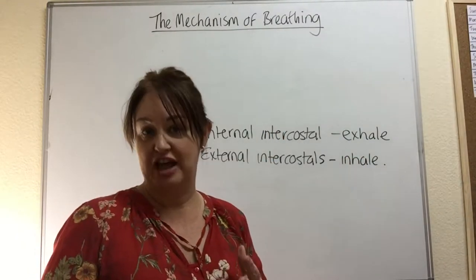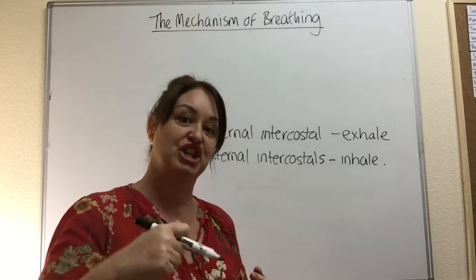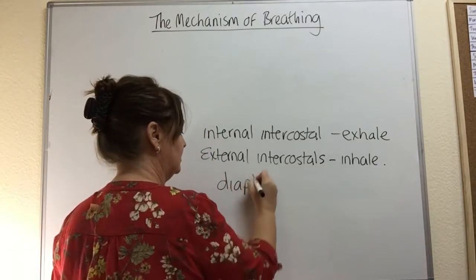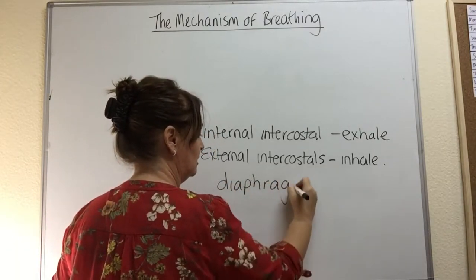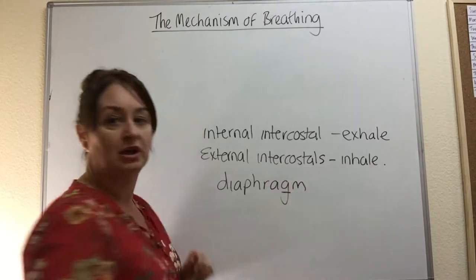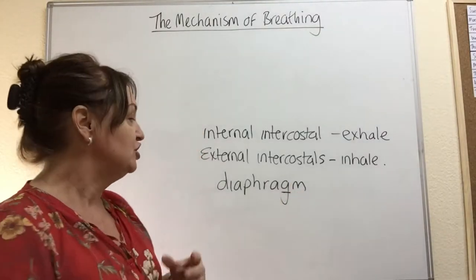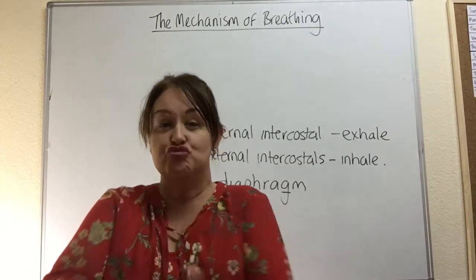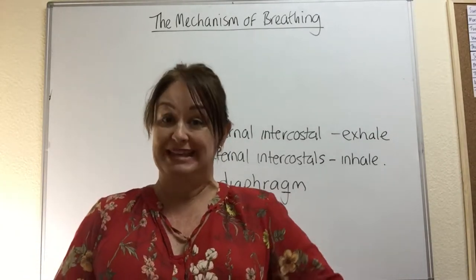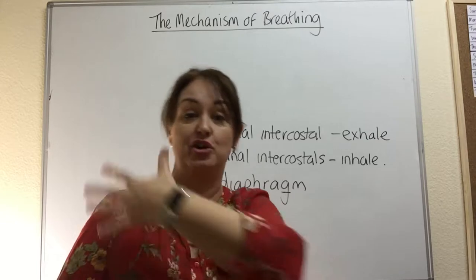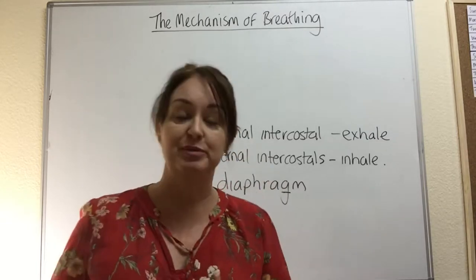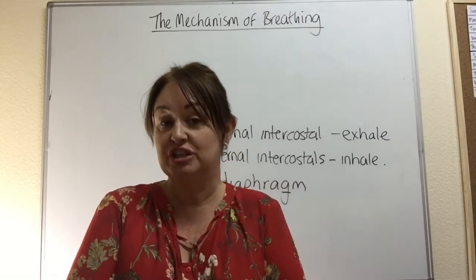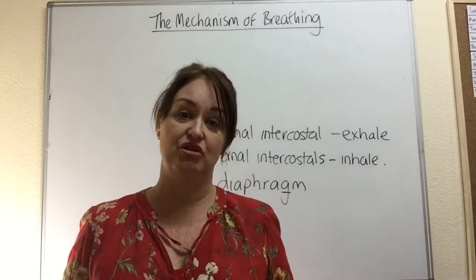Then of course we've got the diaphragm. When we spell that word, don't forget the G. Okay, don't forget that G. The diaphragm is a sheet of muscle that lies right across the base of your thorax. Your thorax is your chest region; your abdomen is your stomach region. It's a sheet of muscle that lies straight across there.